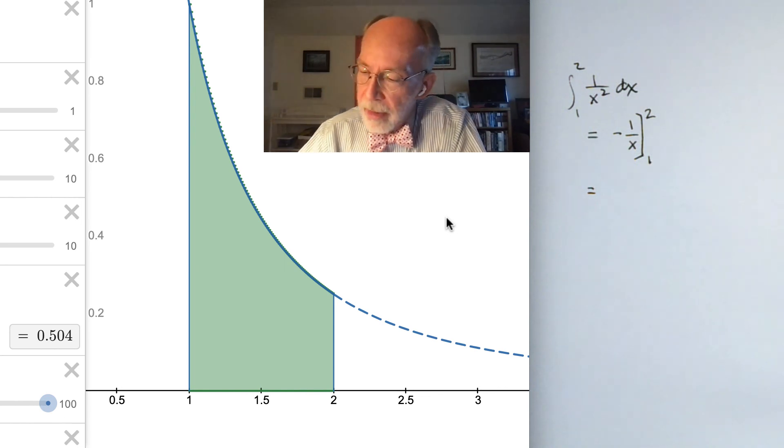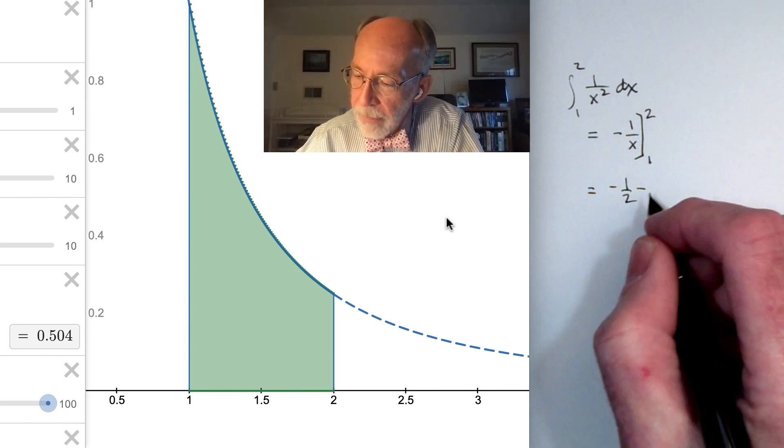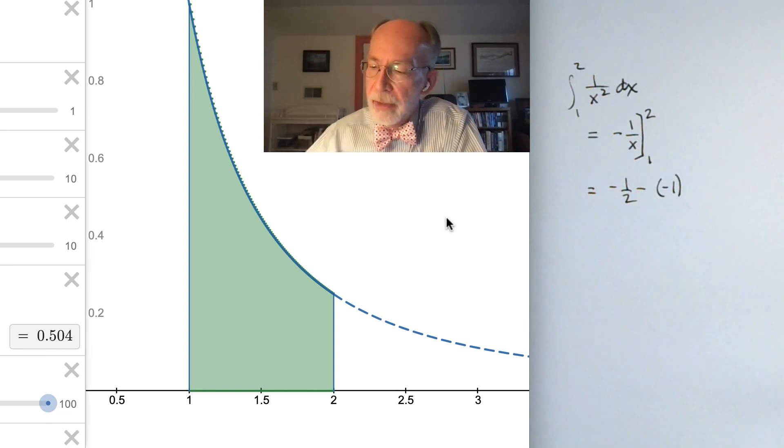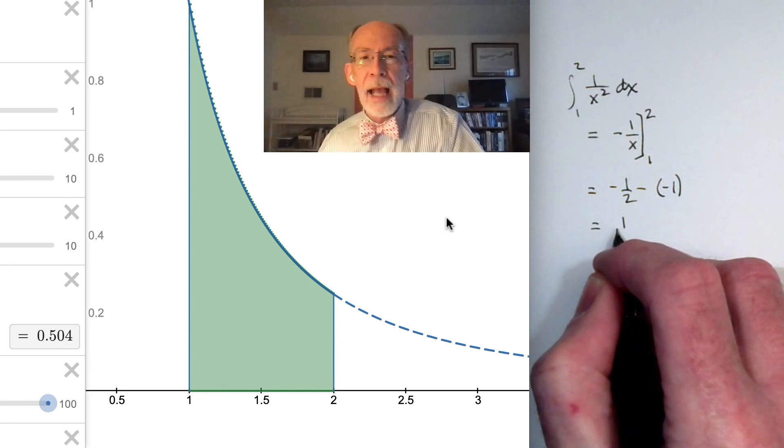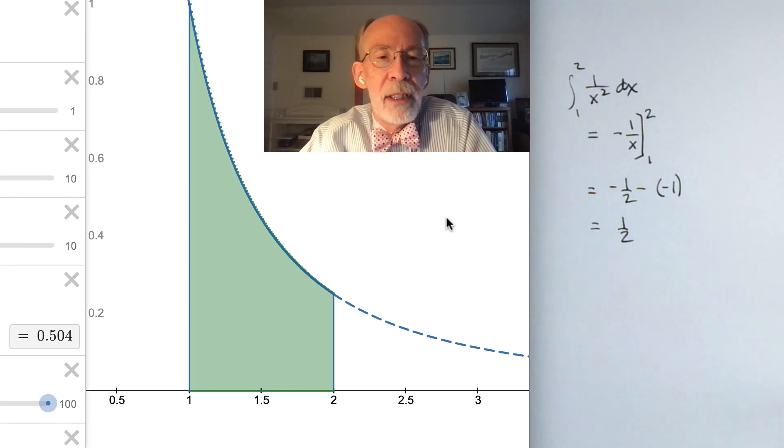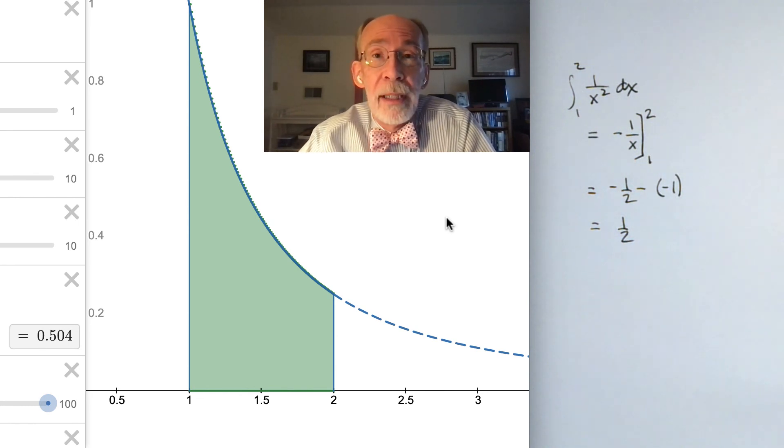So I plug the 2 in, I get -1/2. I subtract -1 over 1, also known as -1. At the end of the day, this is -1/2 plus 1, which is positive 1/2. And if we look on the screen at the approximation using 100 midpoints, we see 0.504. So it seems to be the case that this result holds up example after example after example. That's not a proof, certainly. A proof is beyond the scope of an introductory video, but I hope you have found what we've had to say to be pretty convincing.